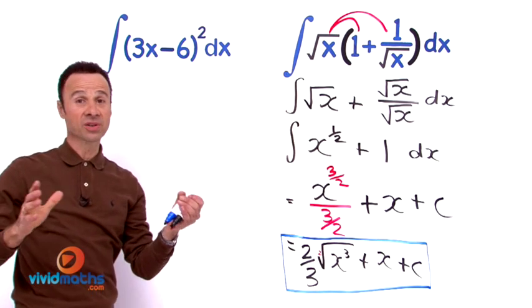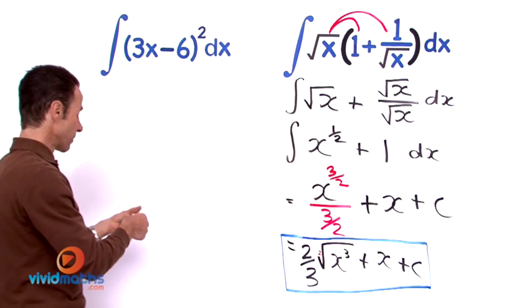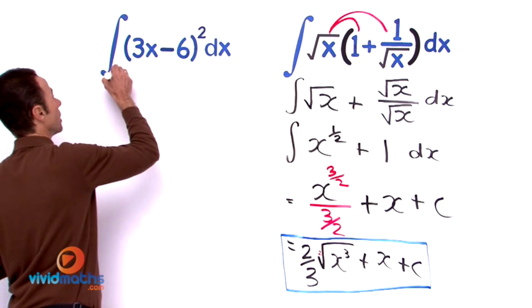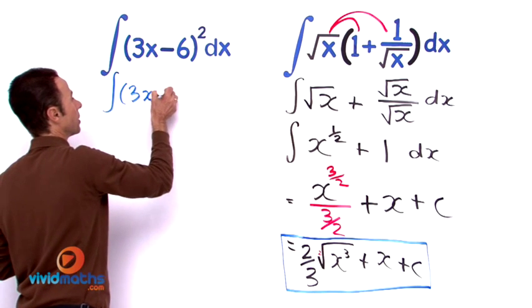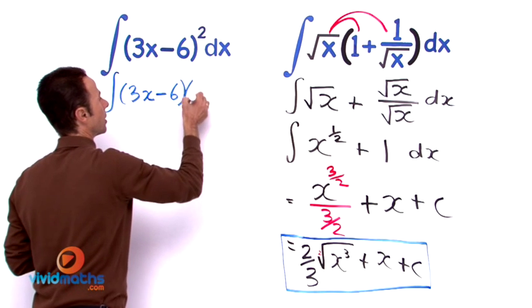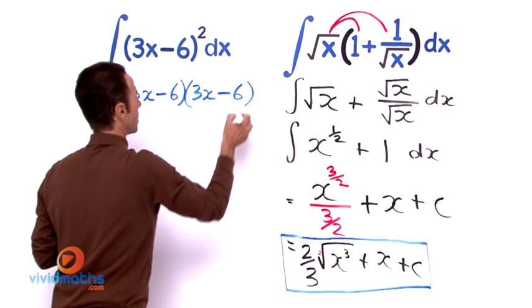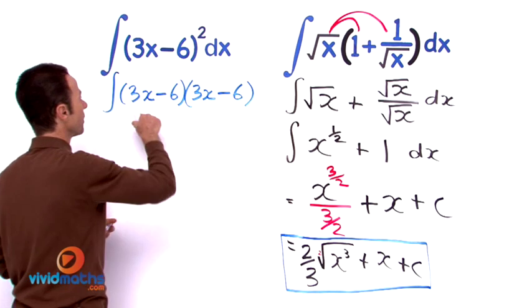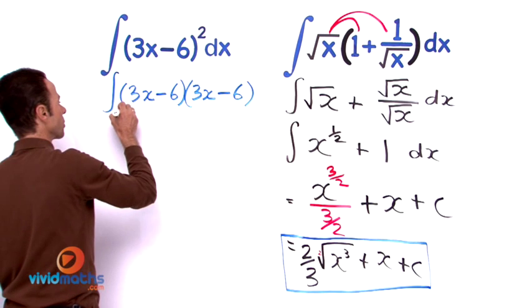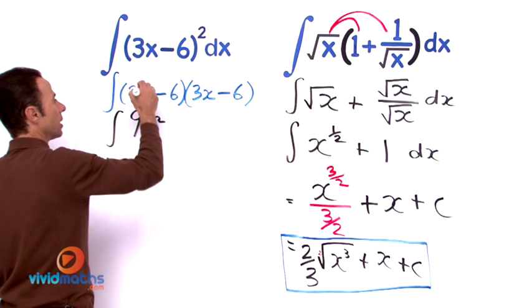We are simply going to expand it. So that will be integral of, let's expand that, that is going to give us 9x squared so that is integral of 9x squared and then we have minus.